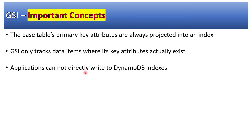Applications cannot directly write to a DynamoDB index. You must write to the base table, and it is an automated process by which DynamoDB takes care of writing that data into the GSI — based on whether the partition key and sort key are present in that record or not.